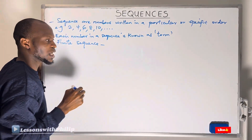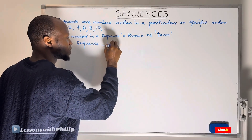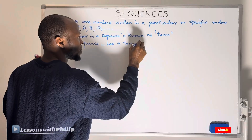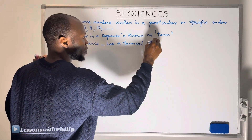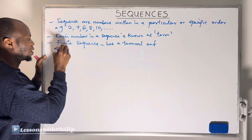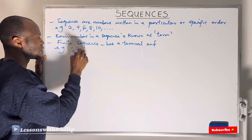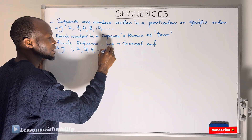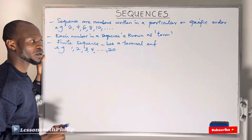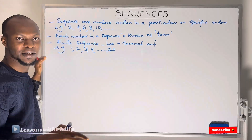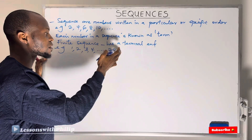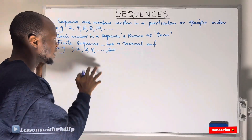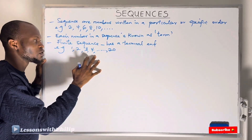A finite sequence is a sequence that has a terminal end. For example, if I write a sequence that ends at 20, this kind of sequence is known as a finite sequence because it ends — no matter how it repeats, it ends at 20.